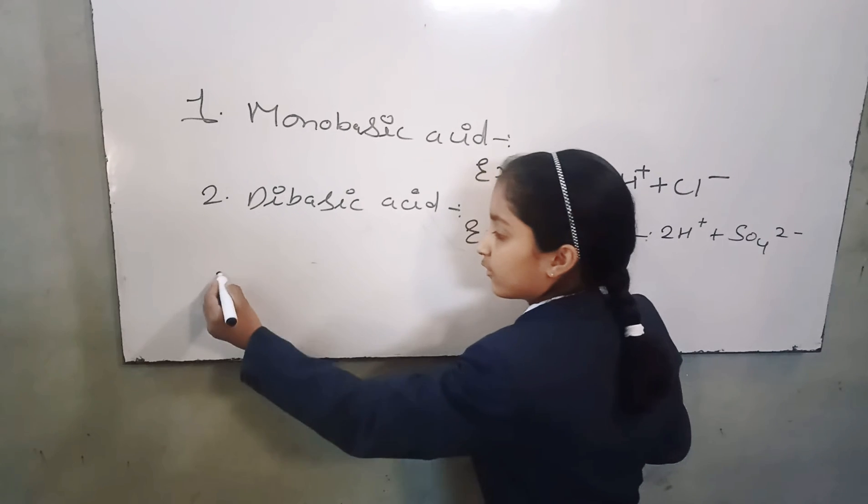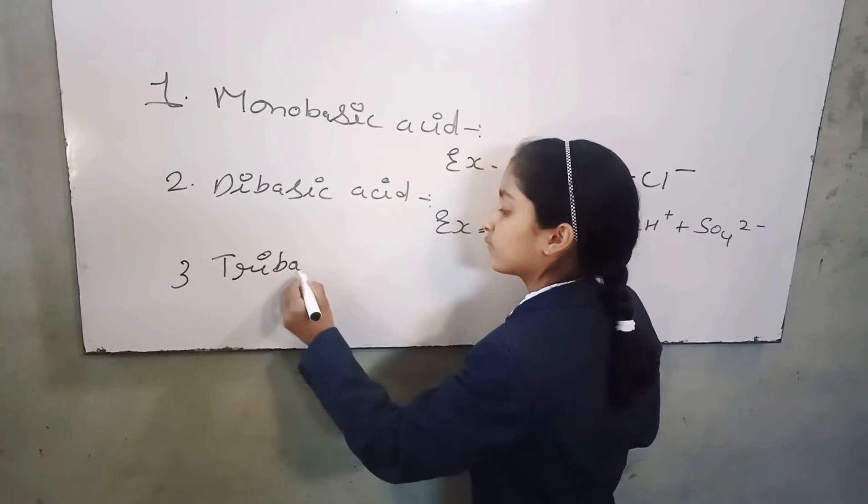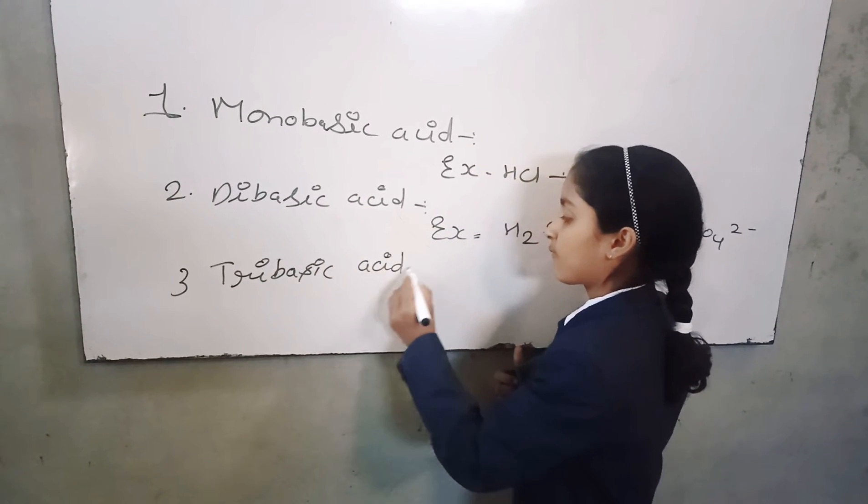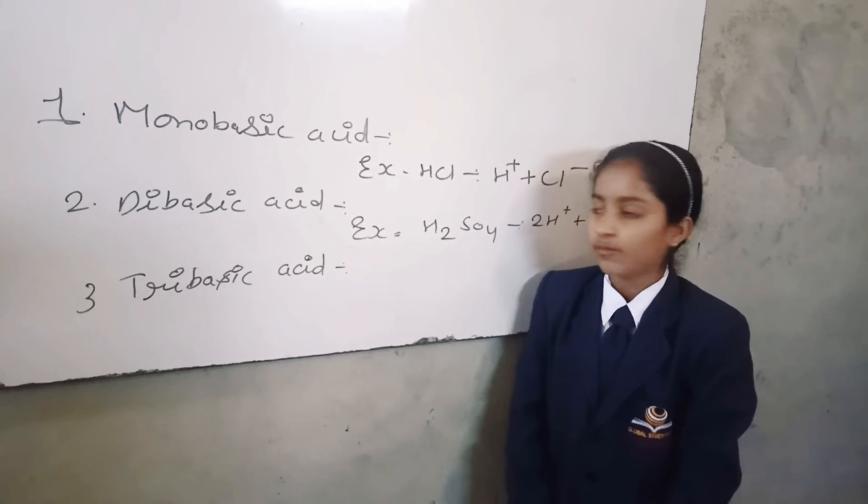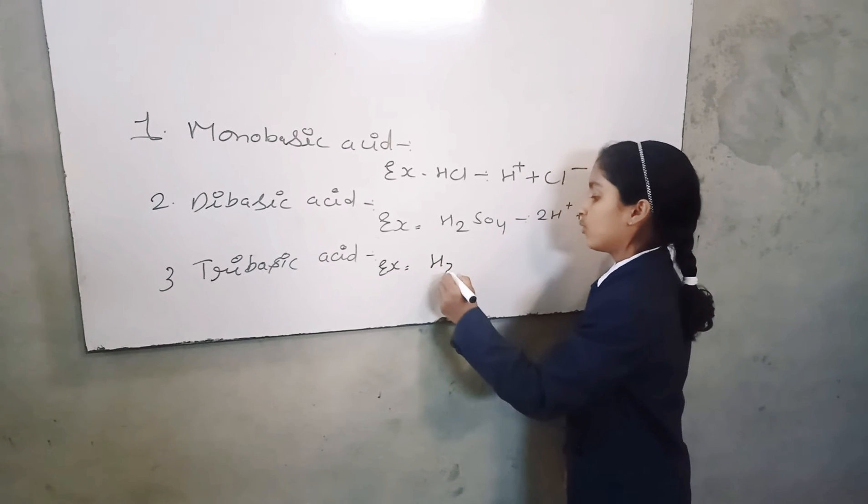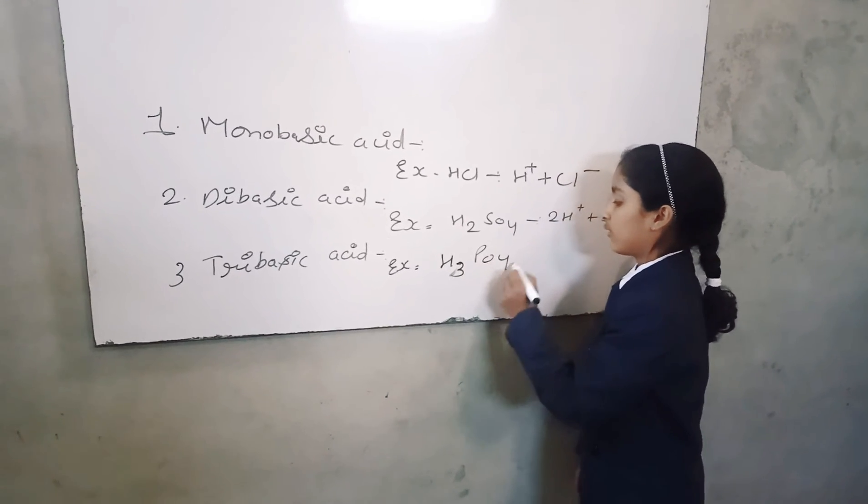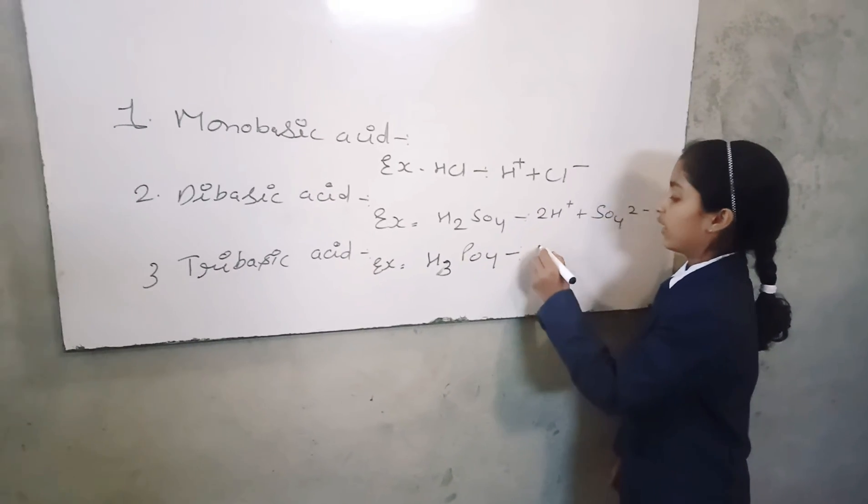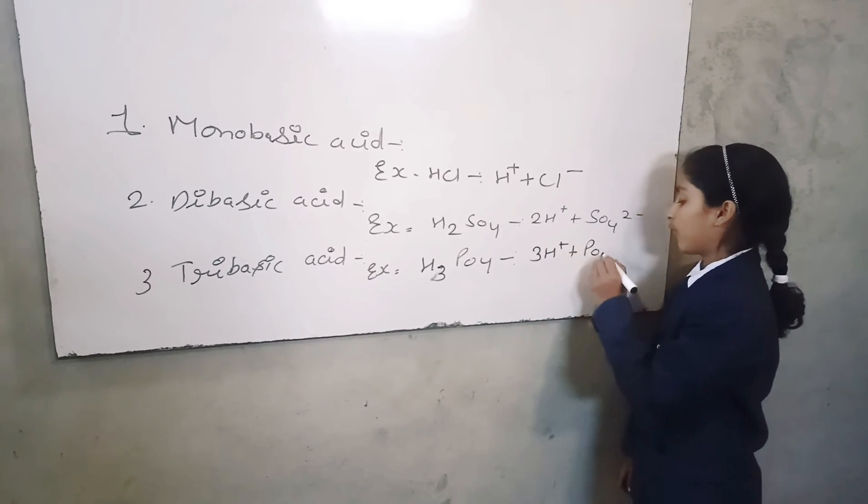Third is tribasic acid. The acid which give three hydrogen ions. For example, H3PO4. When it breaks out, it makes 3H-positive plus PO4 3-negative.